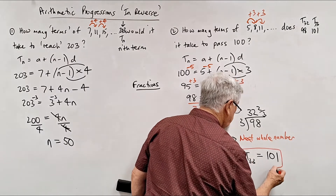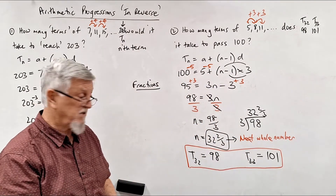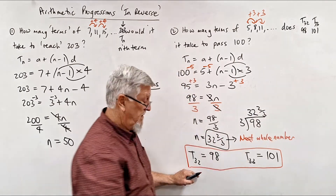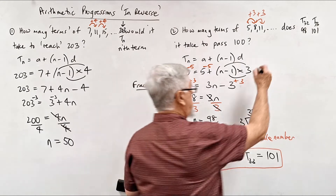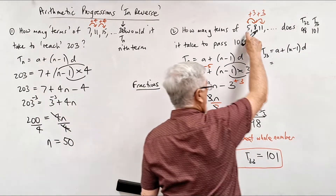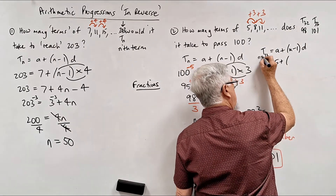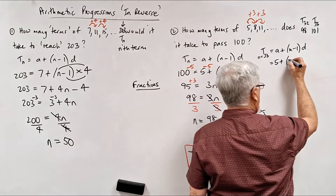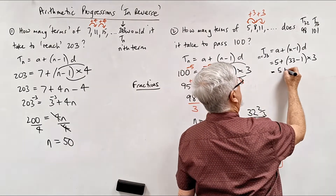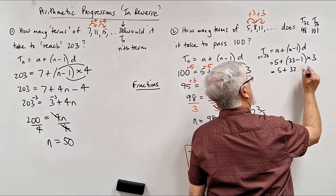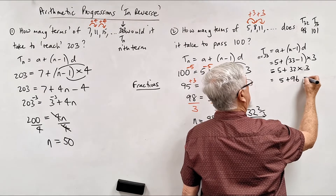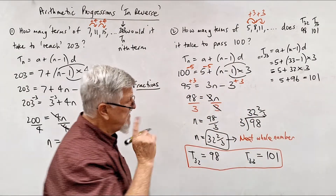Let me verify where those numbers come from. Using T_n = a + (n − 1)d, for the 33rd term: a = 5, n = 33, d = 3. So T_33 = 5 + (33 − 1) × 3 = 5 + 32 × 3 = 5 + 96 = 101. You can see the 33rd term is bigger than 100.